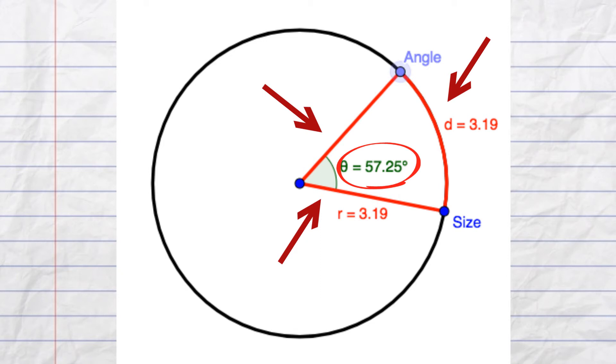With radian measure, the angle measure is measured in relation to the radius of the circle. Now, let's see why the angle measure of a radian equals approximately 57.2958 degrees.